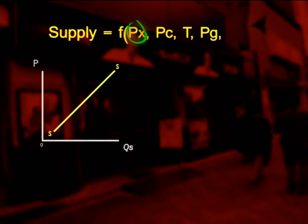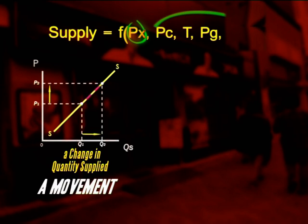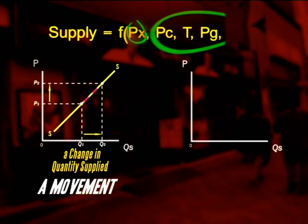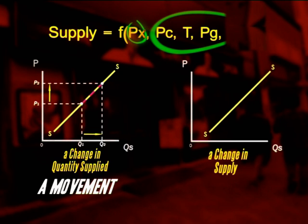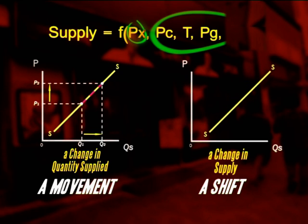A movement along the supply curve reflects a change in quantity supplied, caused by a change in price. A shift of the market supply curve occurs when factors other than price change — this is referred to as a change in supply.